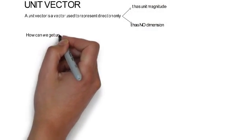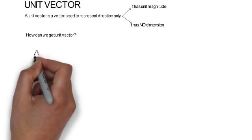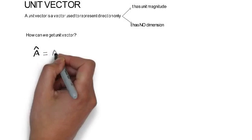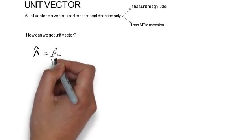How can we get a unit vector? Whenever we want to represent a unit vector, we place a cap over that vector. Thus, a cap represents a unit vector in the direction of a. The unit vector a cap is defined as a vector upon the magnitude of a.